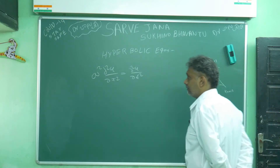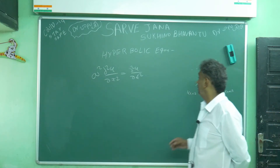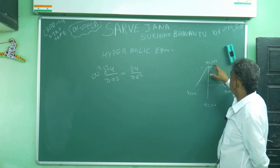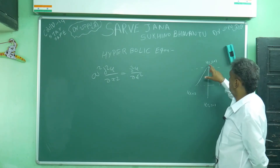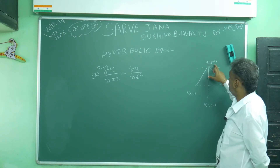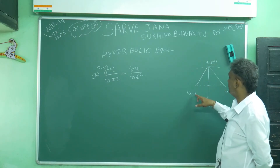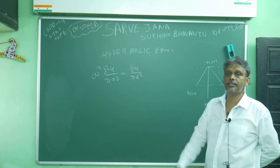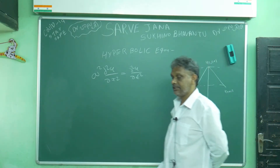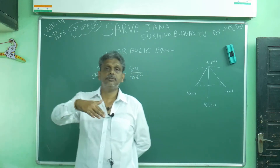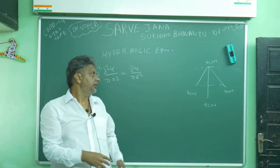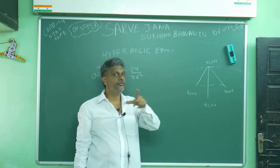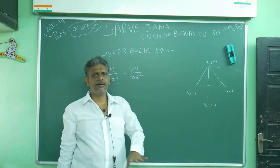Before going into the derivation, I want to tell you a very important thing. For the hyperbolic equation, to find the j plus one position at the i-th row, you need two rows: the j-th position and the j minus one position. Only then can you attack the problem.